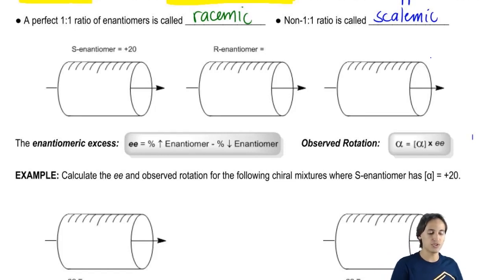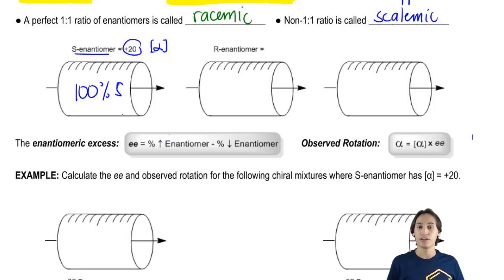So for this first one, as you can see, I have my S enantiomer and it has a specific rotation, the alpha in brackets, of +20. And I want to know if I had 100% of S in this tube, what would be the observed rotation? The answer is that the observed rotation would just be the same thing, it would be positive 20.